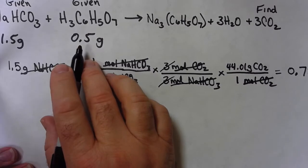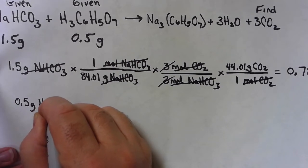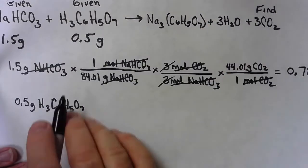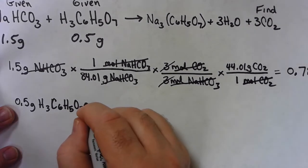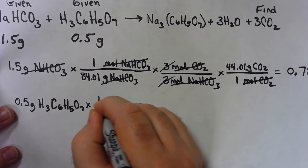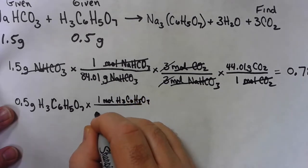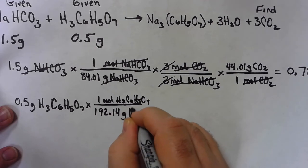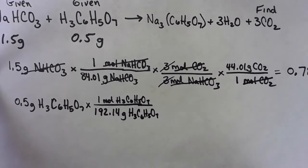So now I need to go back and do it again using the 0.5 grams of the citric acid. I've got my balanced equation. I've got to turn this as my given, my second given, 0.5 grams of the citric acid. I need to turn that into moles. Again, I'm going to divide that by the molar mass of the citric acid. And the molar mass of the citric acid is 192.14 grams of the citric acid. Calculated that in an earlier video.